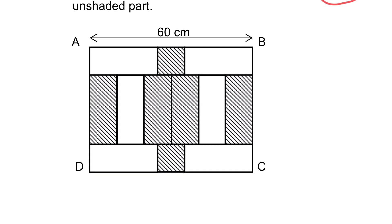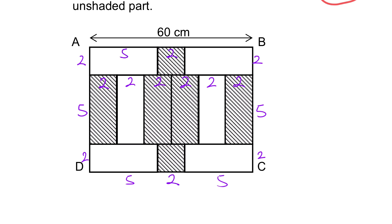For each rectangle, the breadth is 2 units and the length is 5 units. So labeling the dimensions: the breadths are 2, 2, 2, 2, 2, 2, and the lengths are 5, 5. The same applies to the other rectangles — breadths are 2, 2, 2, 2 and lengths are 5, 5. The length of the square must also be 2 units. This entire length here is 5 plus 2 plus 5 equals 12 units, and it equals 60 cm.